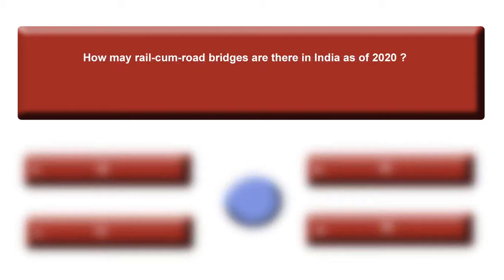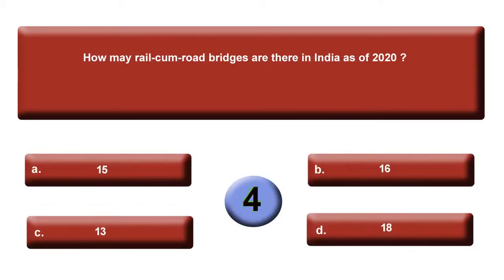How many rail-cum-road bridges are there in India as of 2020? Your options are: option A, 50; option B, 16; option C, 13; or option D, 18. Comment your answer in the comment section. Your answer is B, 16.